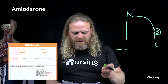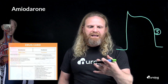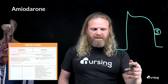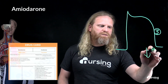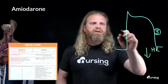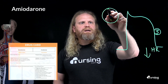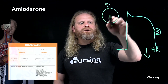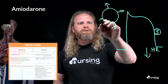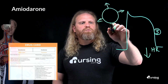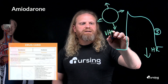Amiodarone works by prolonging phase 3 of the cardiac action potential, which inhibits adrenergic stimulation and slows the heart rate, leading to a decrease in heart rate. It also leads to a decrease in peripheral vascular resistance, resulting in vasodilation.